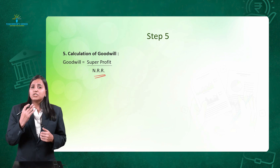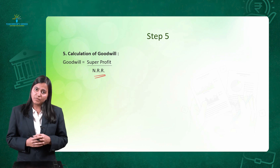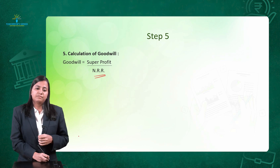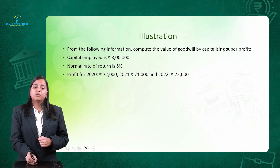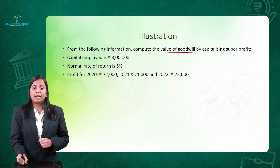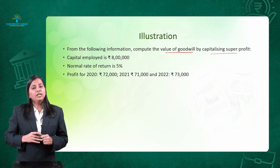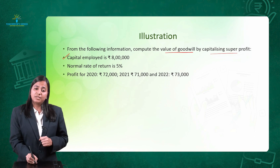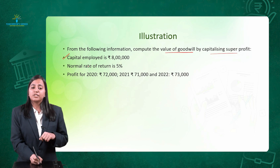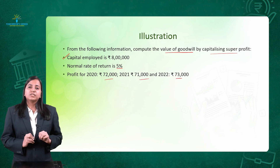Now we will solve a sum to understand this in a much better way. The question says: from the following information, compute the value of goodwill by capitalizing the super profit. Capital employed is given, normal rate of return is 5%, and profits for years 1, 2, and 3 are given.